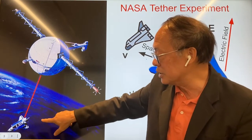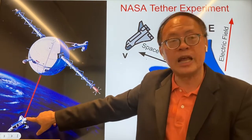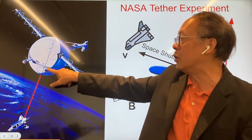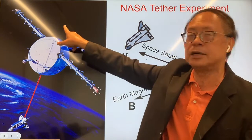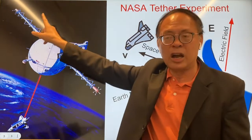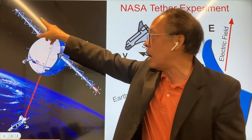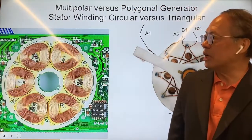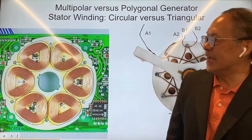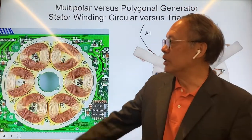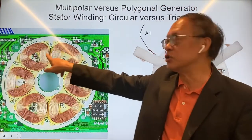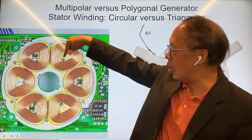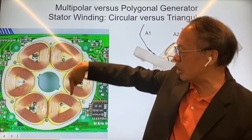The electron is absorbed from the atmosphere — the ionosphere — and then ejected back into the ionosphere through these antennas. Now, instead of a very long tether, you can coil up the tether into solenoids, and there are altogether six solenoids here.